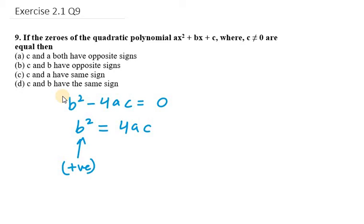So b² is positive, 4ac must be positive, or the product of a and c must be positive. Or you can say that a and c must have same sign, either positive or negative, then only we can have same sign.